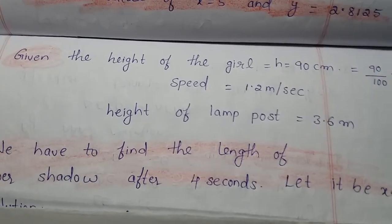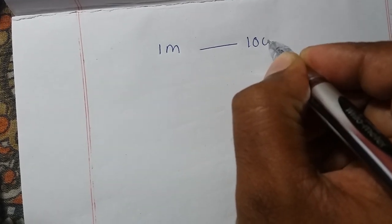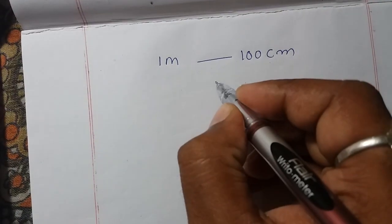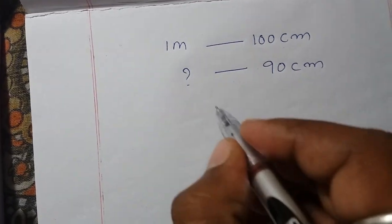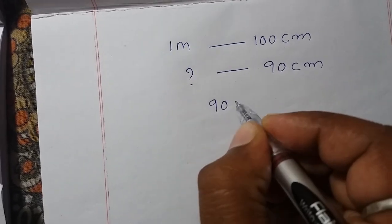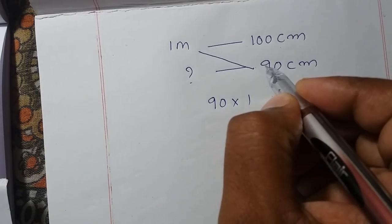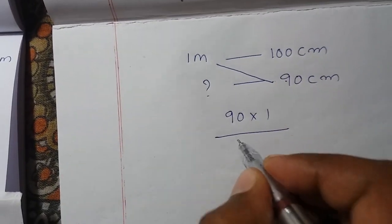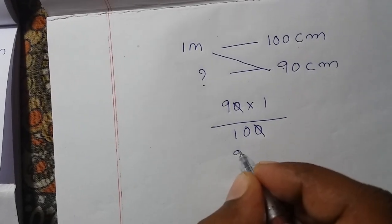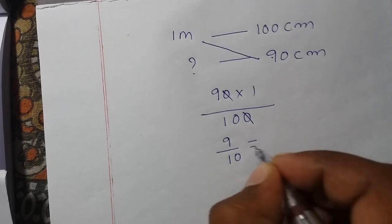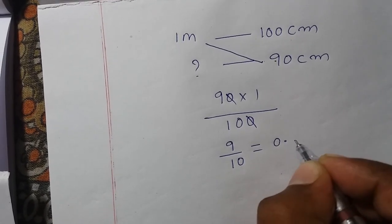To convert centimeters into meters: we know 1 meter equals 100 centimeters. So for 90 centimeters, we calculate 90 × (1/100), the zeros cancel, leaving 9/10, which is 0.9 meters.